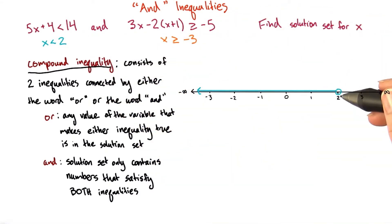we can show x is less than 2 like this. x is greater than negative 3 will look like this. The solution set here is everywhere that the two graphs overlap.